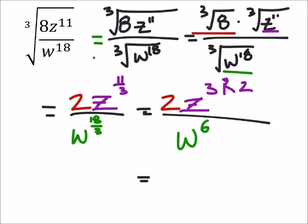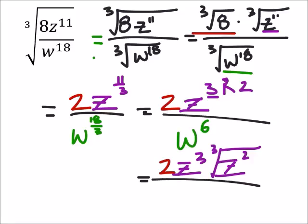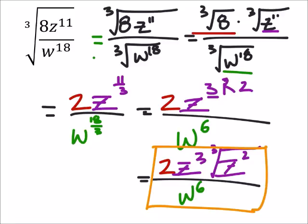So this equals 2. I've got z to the power of 3, because we had 3 holes. But we had a remainder of 2, so I've got z squared, which has to stay in the cube root. Then we divide this by w to the power of 6. Let me show that division there.